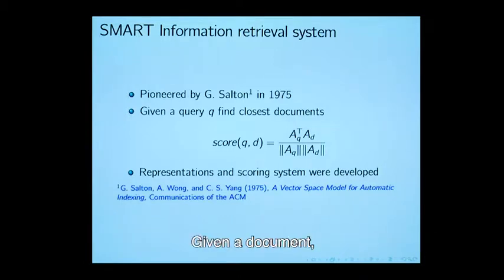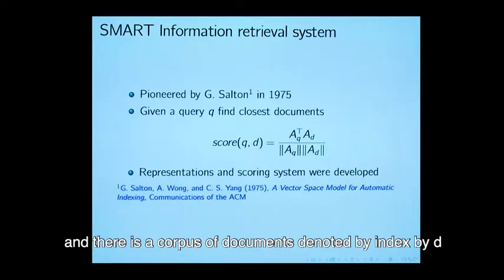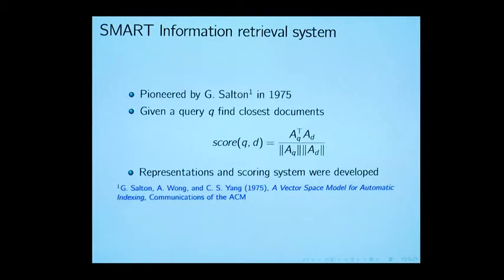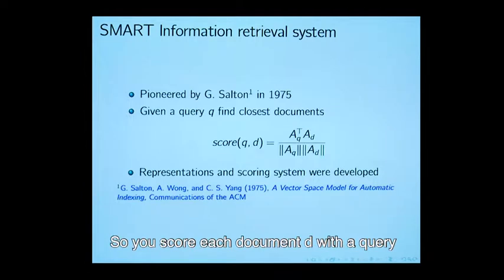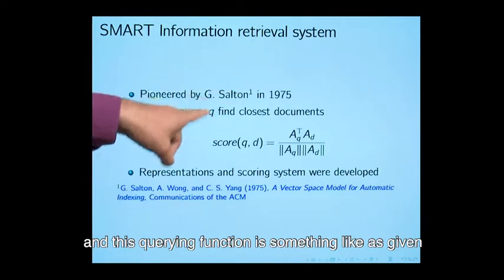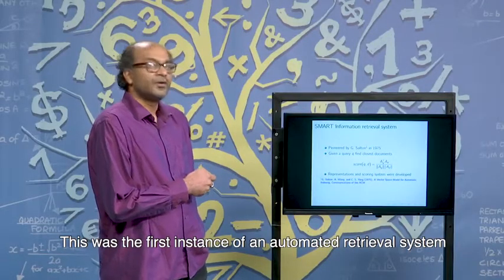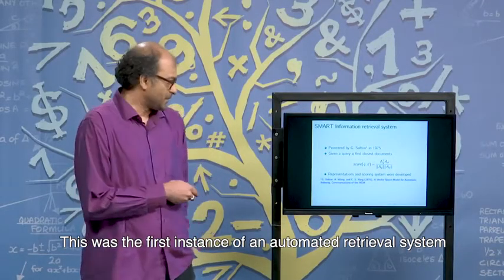If we have given a document, let us call the document Q or the query document and there is a corpus of documents denoted by index by D. You can say that I want to retrieve the documents which are closest to the query document Q. You score each document D with the query and the scoring function is something like as given by this formula, it is nothing but the cosine of these two vectors. This was the first instance of an automated retrieval system.